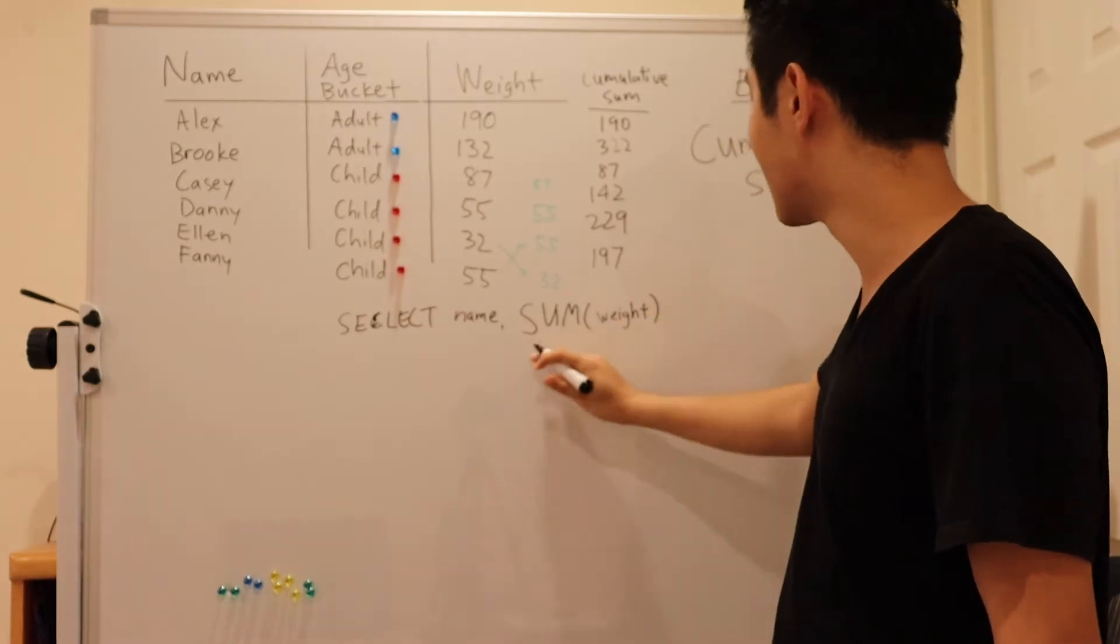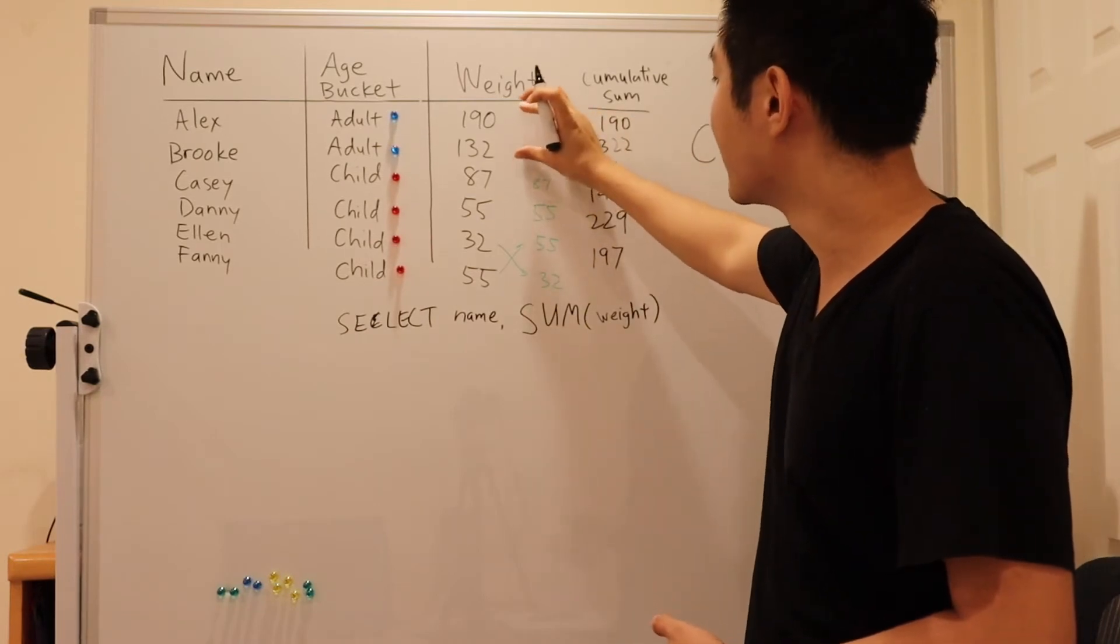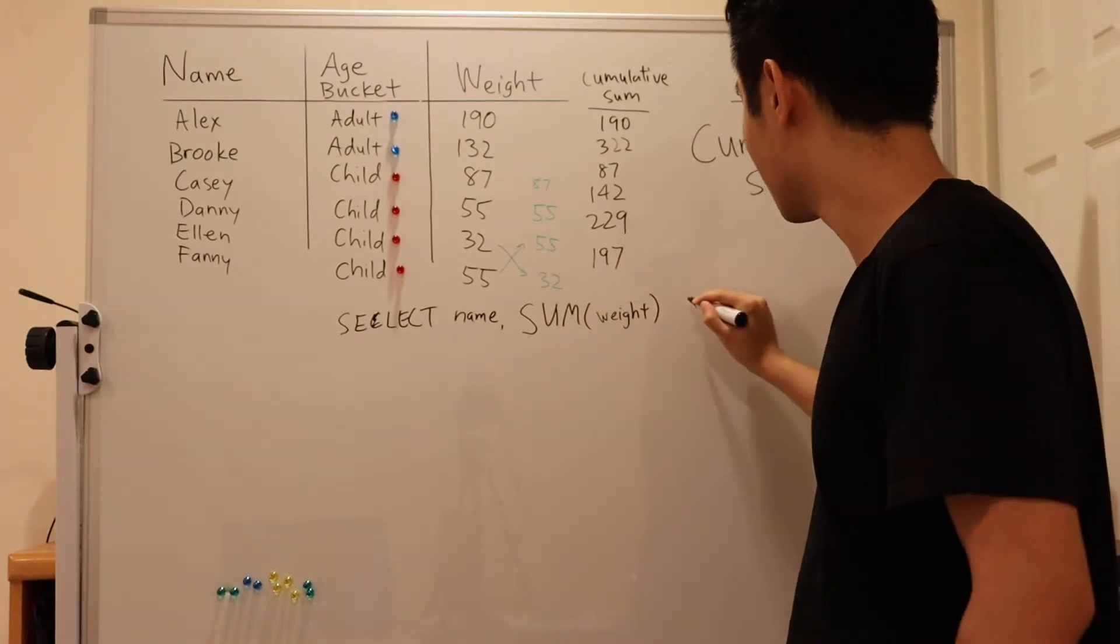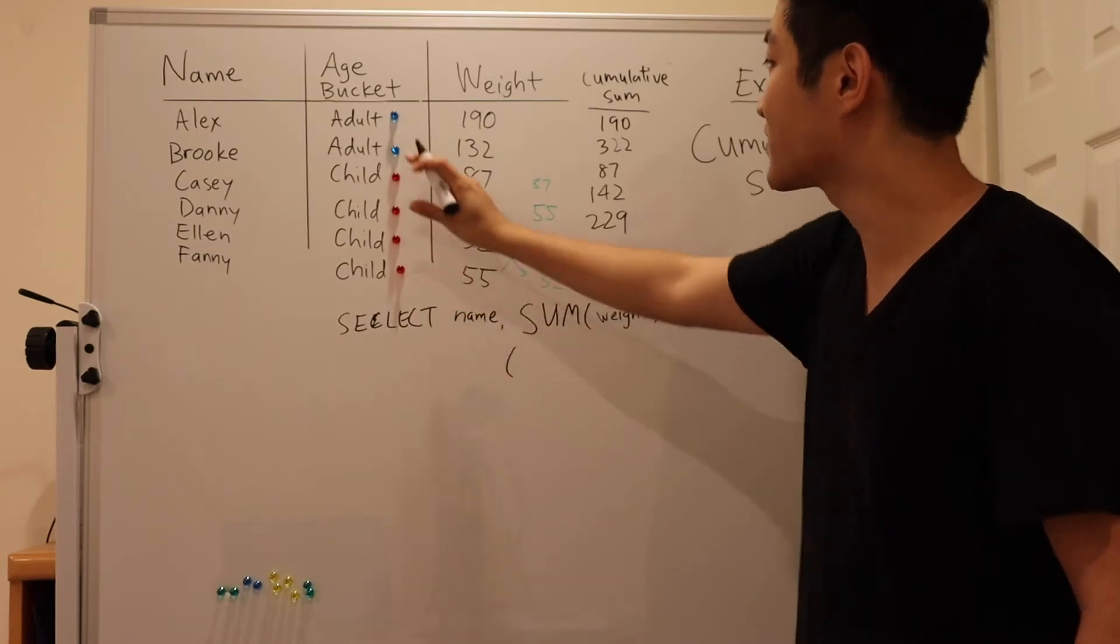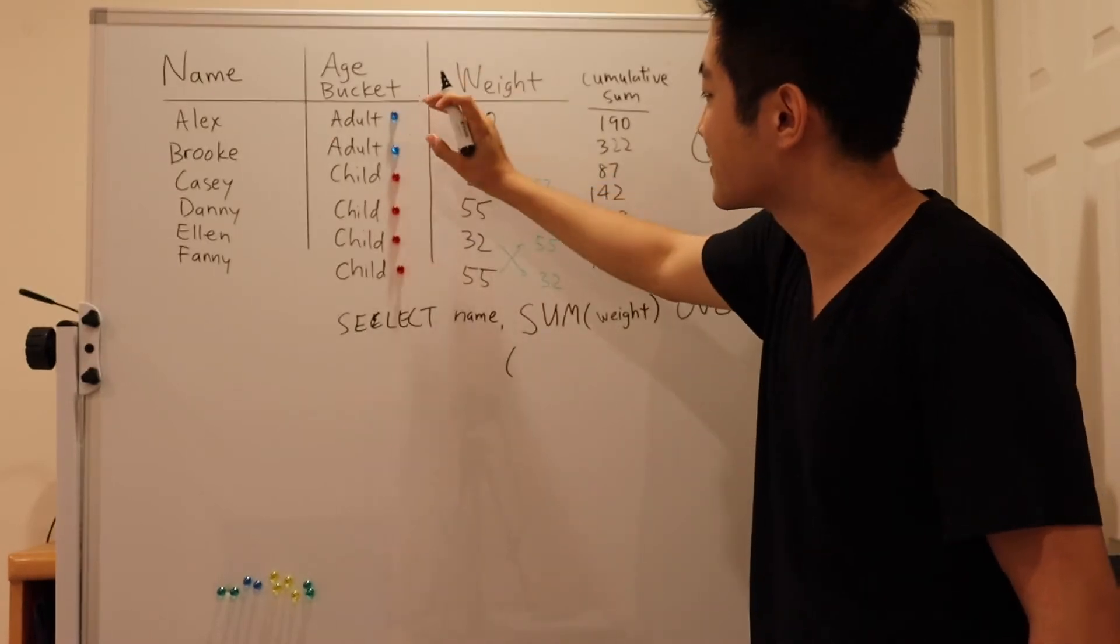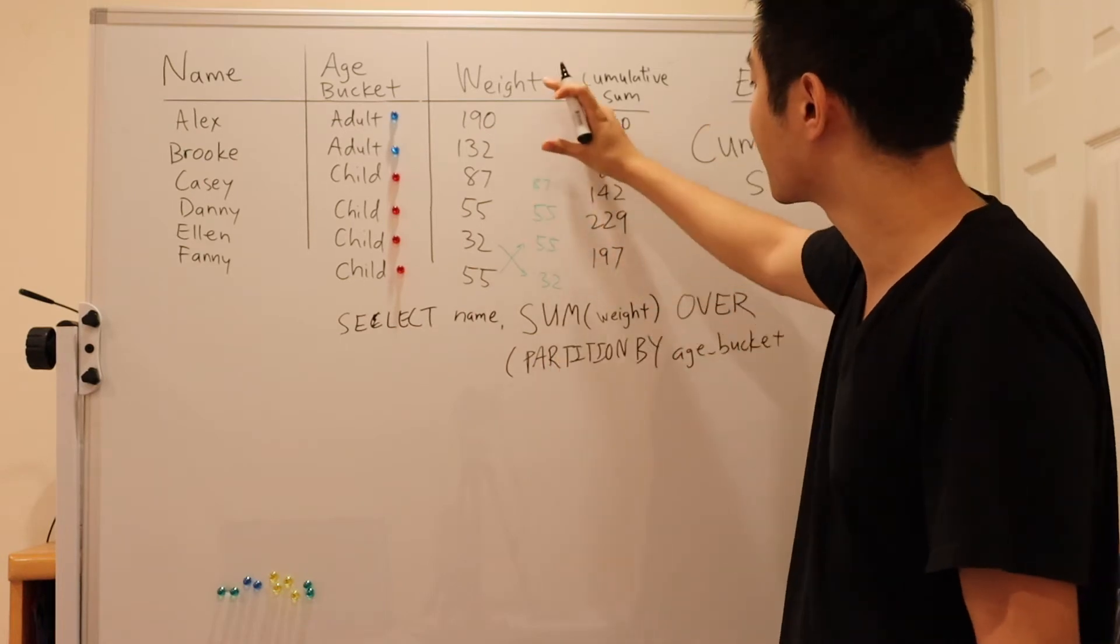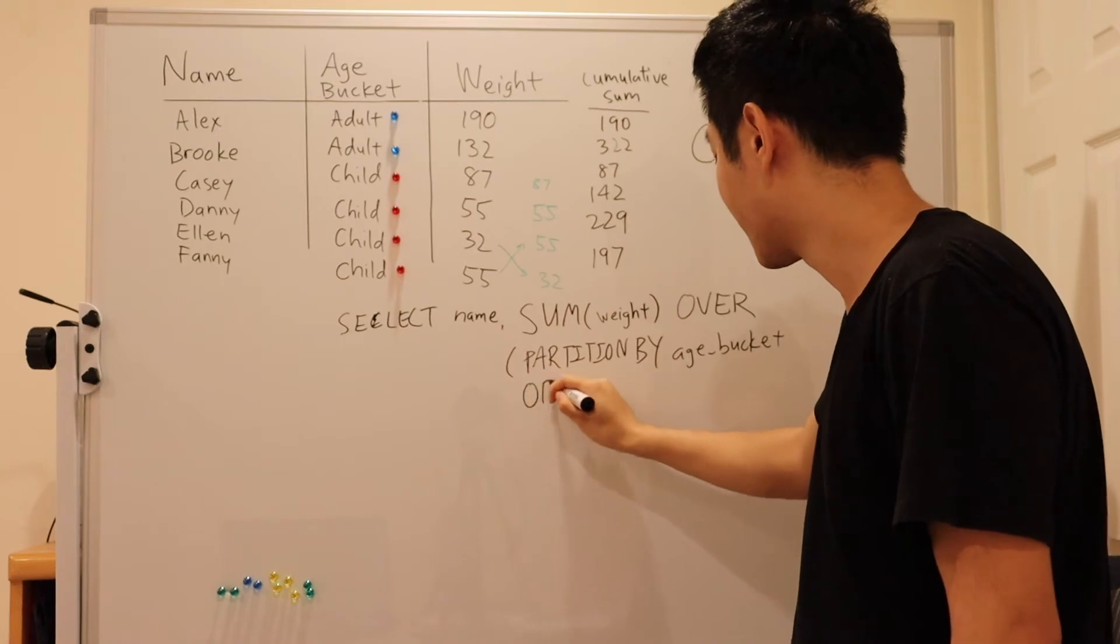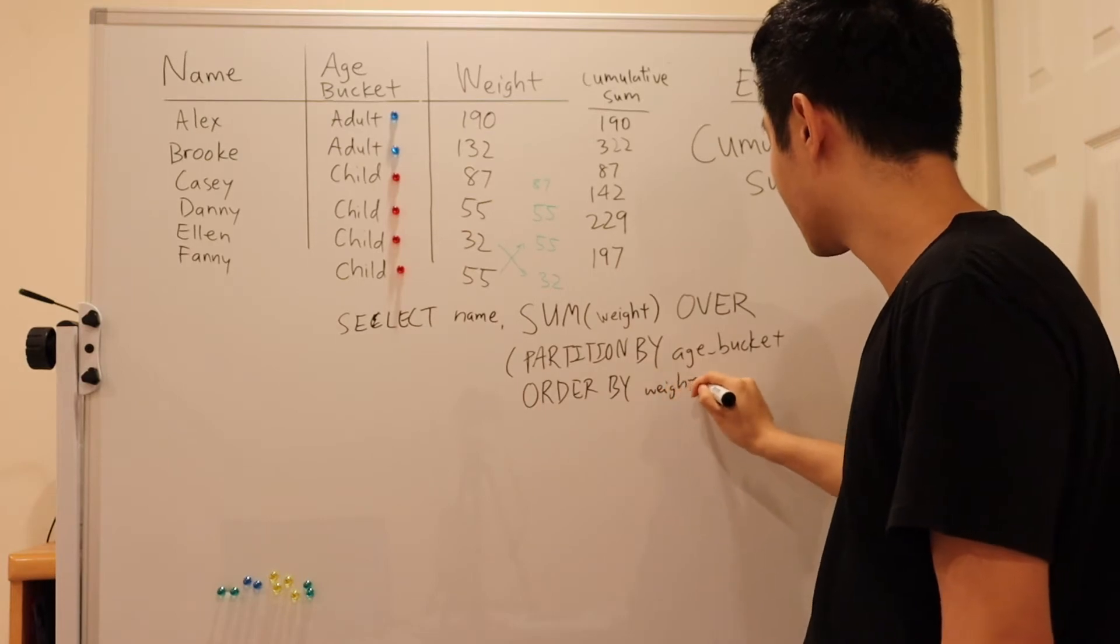But this is not your typical group by sum, because we're going to sum for a particular window for every single row. So how do we define the windows here? We use the over keyword again. And then we're partitioning by age bucket as before. We want to create separate partitions based on each value of this column. So partition by. But first, what we need to do is order the weights within each partition. Order by weight descending.